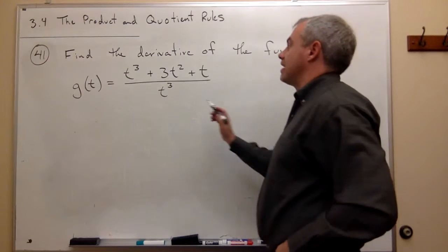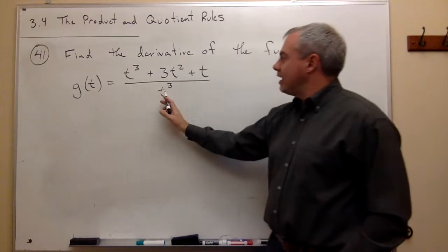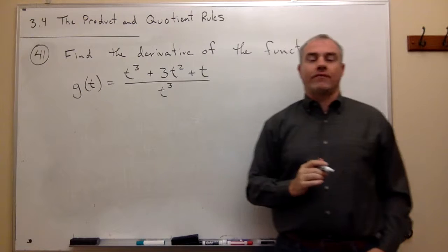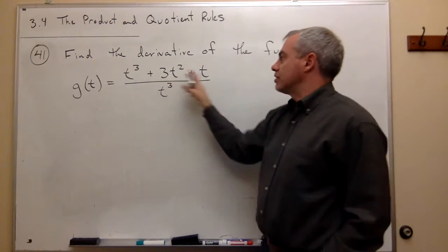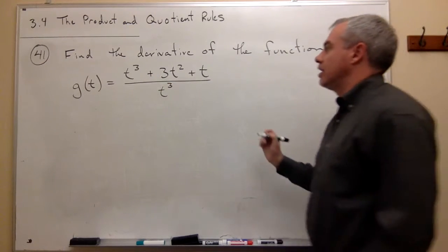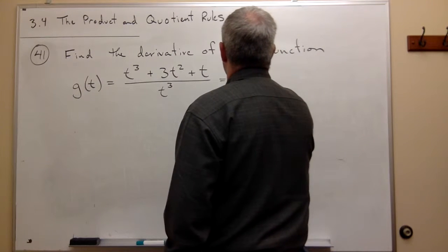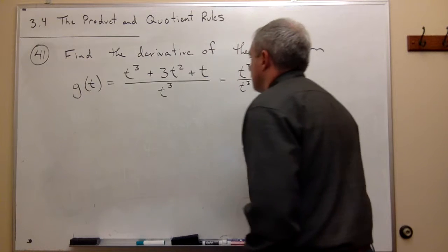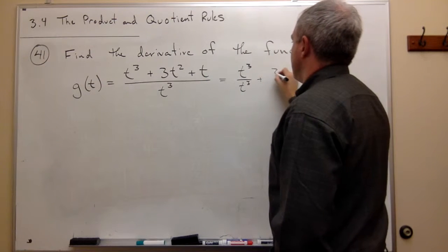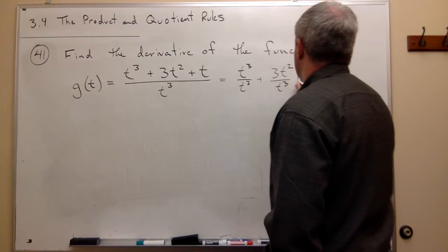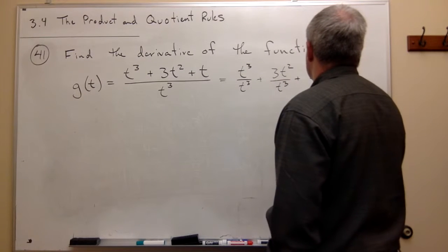And the reason I say that is right off the bat, I see, oh wait a second, I could break this thing up into three separate fractions because all of these things on top are divided by t cubed. So I could rewrite this function as t cubed over t cubed plus 3t squared over t cubed plus t over t cubed.